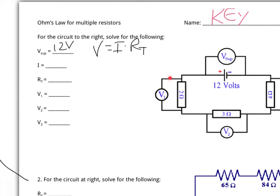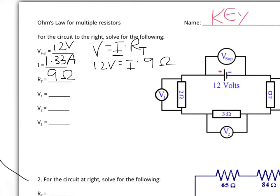Because the resistors are wired in series, it's simply a matter of adding them all together. We have our 2 ohm, 3 ohm, and 4 ohm resistor — together they make 9 ohms of total resistance. Now we can solve for current using Ohm's law: 12 volts equals current times 9 ohms of resistance, giving us a total current in the circuit of 1.33 amps.